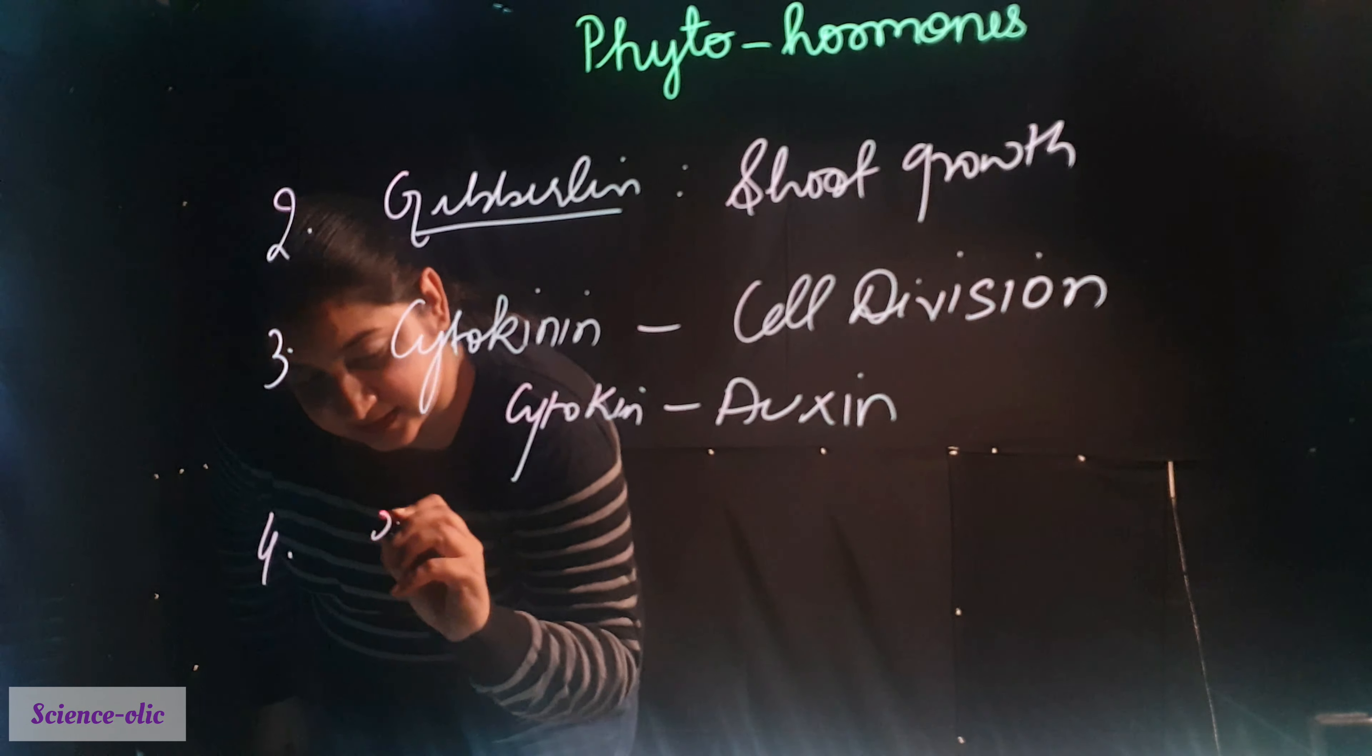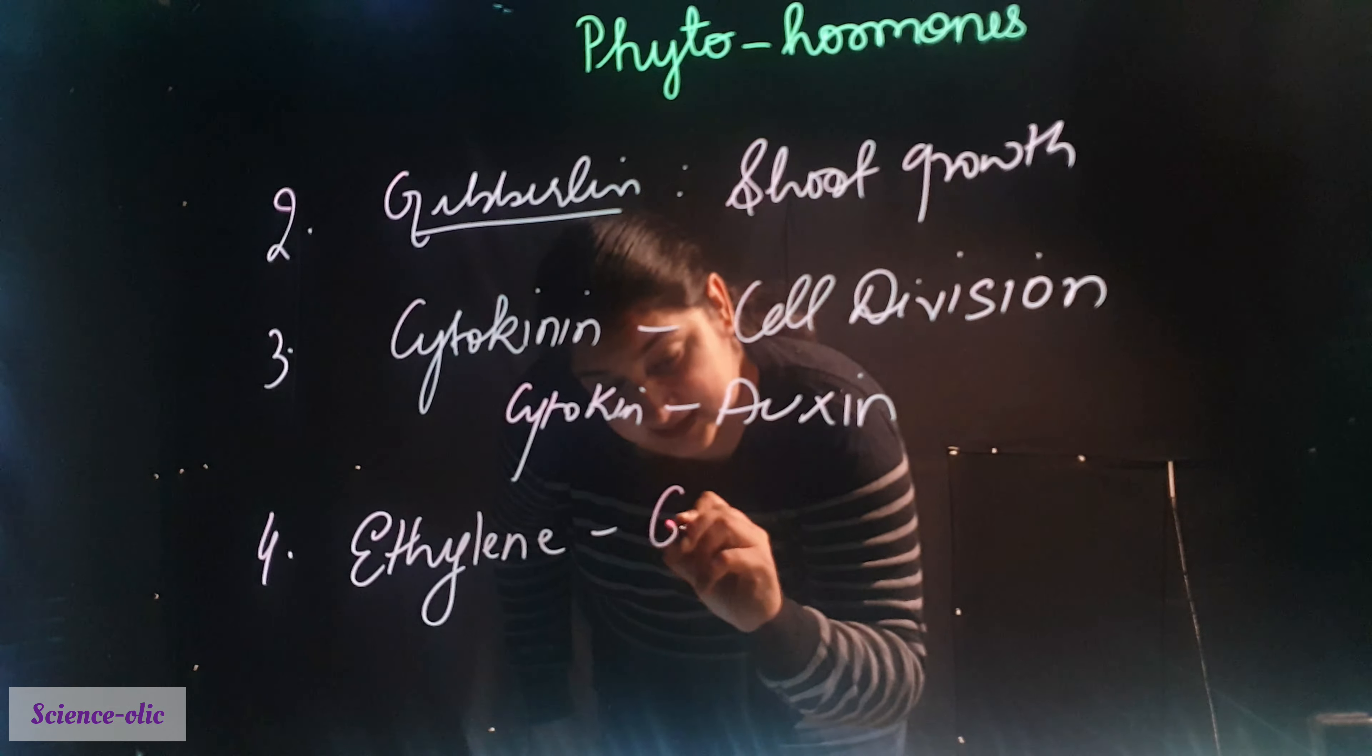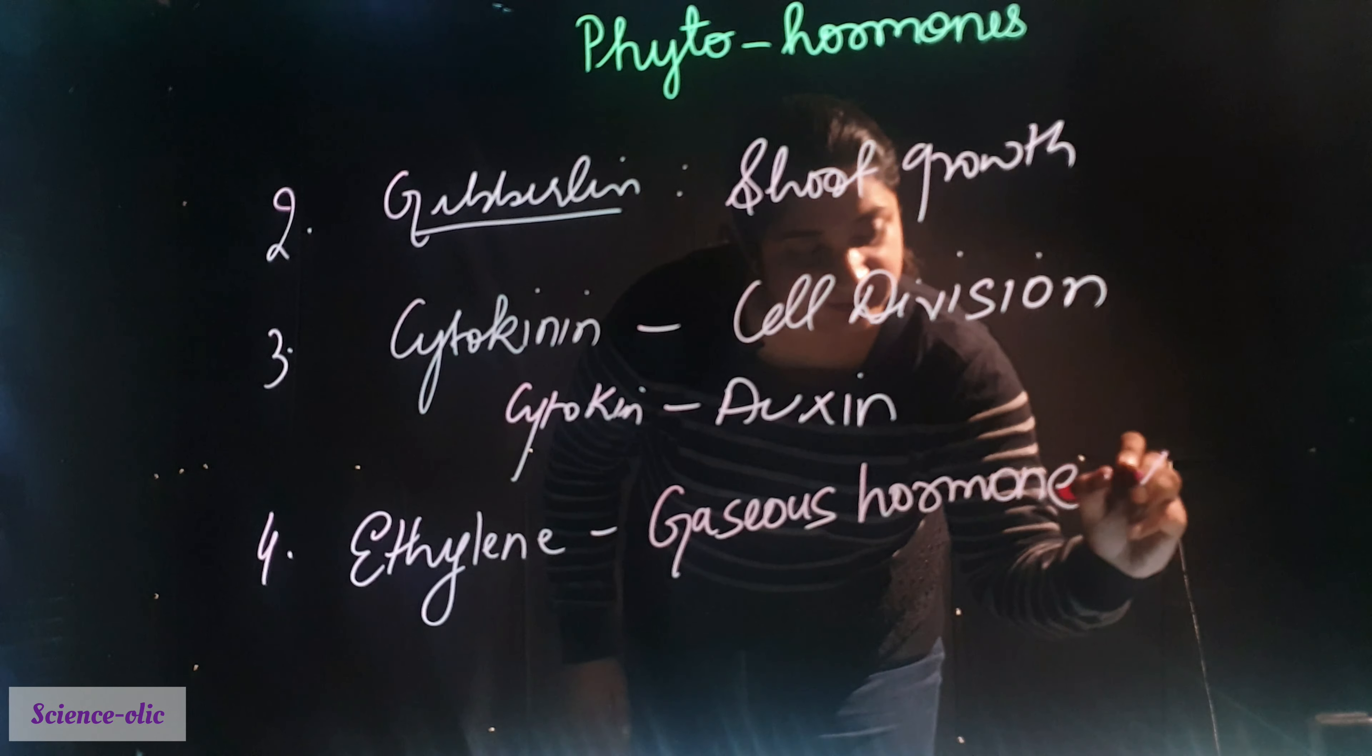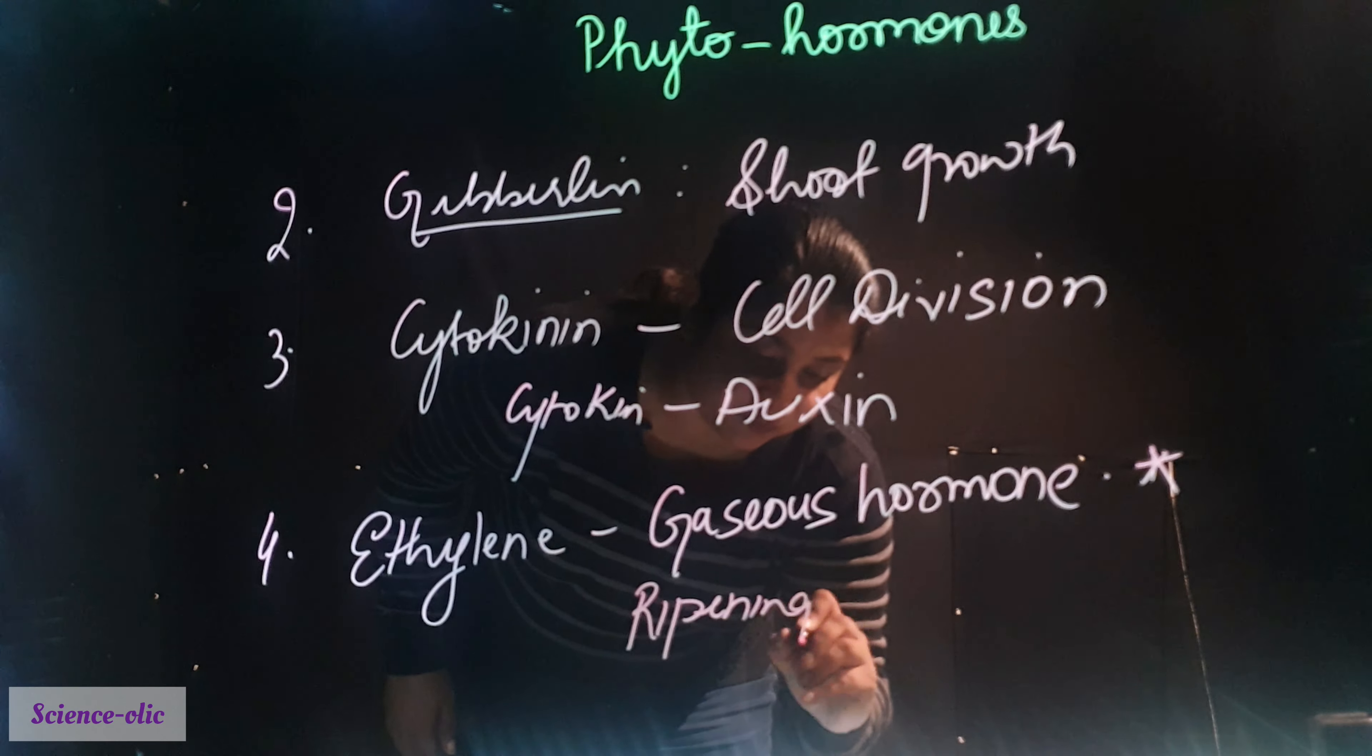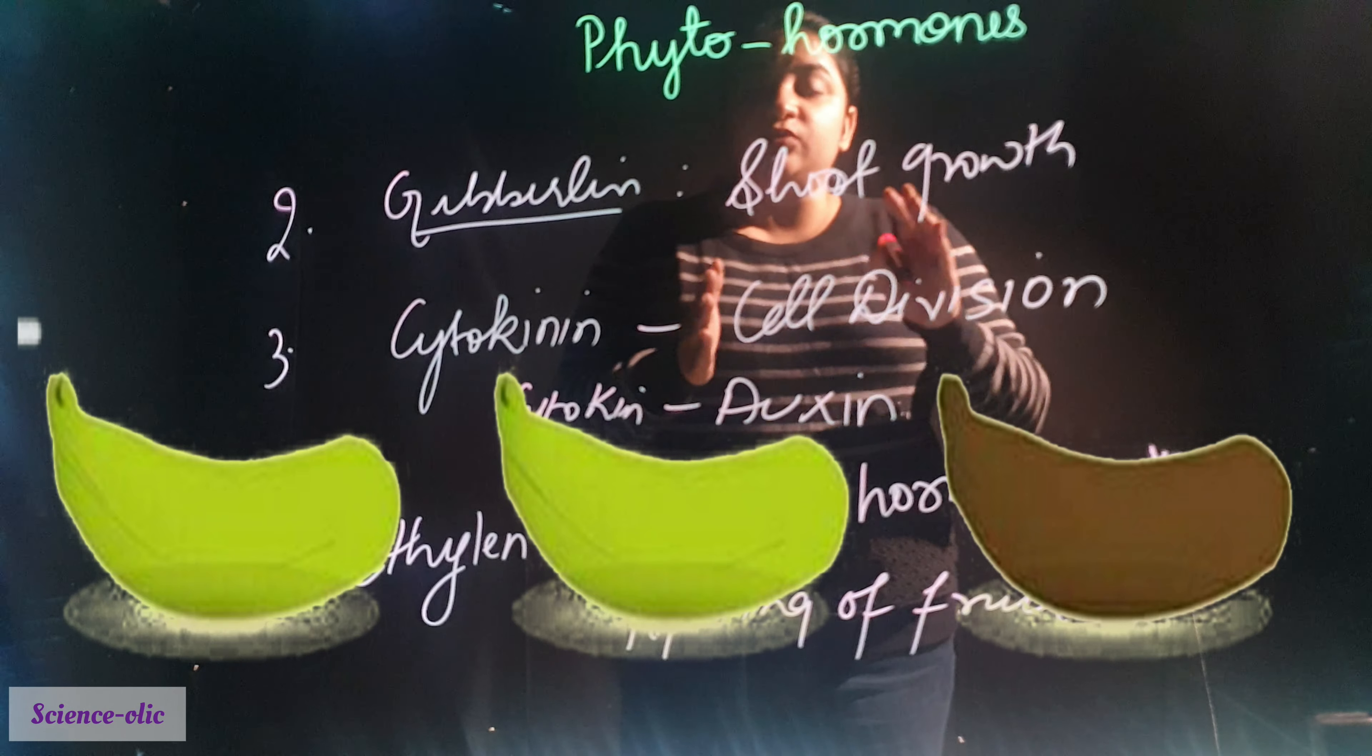The fourth one is ethylene. This hormone is the only hormone in gaseous state, so this is known as gaseous hormone. This is very important. And ethylene helps in ripening of the fruit. What is ripening of fruit? The fruit which helps in maturation. The banana first color is green, then it ripens and its color changes into yellow.